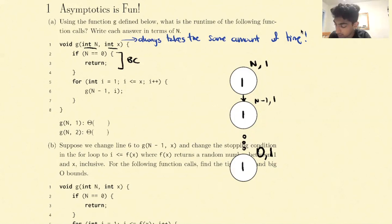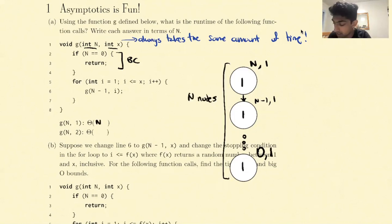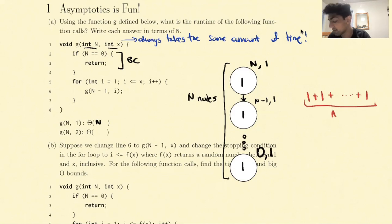To figure out the total runtime of this function, we just need to figure out the sum of all of these nodes. We can see there are n nodes in this tree. Each node is doing a constant amount of work, which means the runtime is going to be Θ(n). The reason is we have the following sum of 1 plus 1 plus 1, and there are n of these ones.